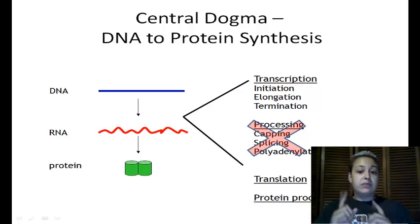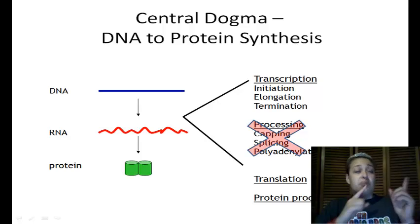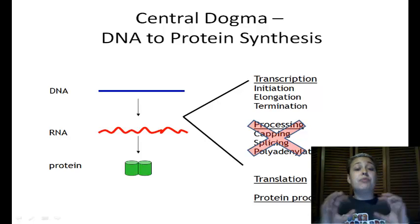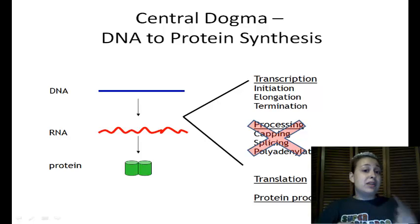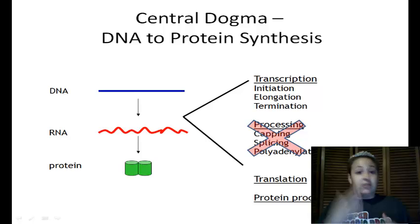Over here on the side, we show you that there's supposed to be processing of some sort. That's typically only in eukaryotes when we actually have to get that mRNA strand from the nucleus out to the ribosome. Since both transcription and translation in prokaryotes are done in the cytoplasm, we don't need to do processing. And since they're both in the cytoplasm, they can basically almost be done on top of one another.